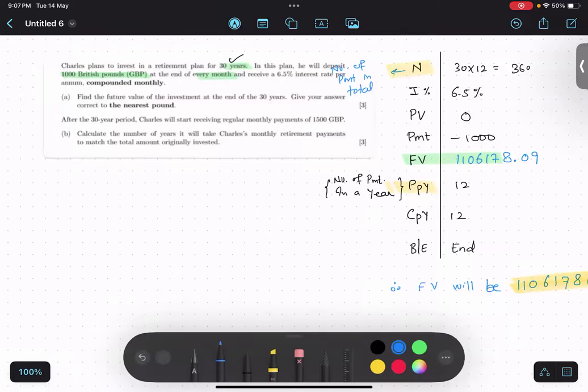Take some time and do the second part also. In part B, after the 30 year period, Charles will start receiving regular monthly installments of £1500. Calculate the number of years it will take for Charles's monthly retirement payments to match the total amount originally invested. So first of all, total amount invested: he has invested £1000 every month for 360 months, so he has invested £360,000.